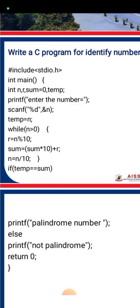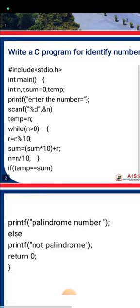After that, the while condition: while n is greater than 0, the main logic executes. r equals n modulo 10, which calculates the remainder. n is the value given by the user divided by 10. Then sum equals sum multiplied by 10 plus r, which builds the reversed number digit by digit. Then n equals n divided by 10 to reduce the number each iteration.